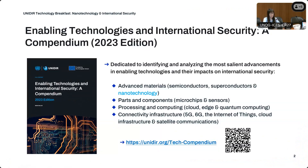The series builds upon the research insights from our recent publication titled Enabling Technologies and International Security: A Compendium, 2023 edition, which you can access through the link or QR code on the screen. This compendium is dedicated to identifying and analyzing the most salient advancements in enabling technologies and their impact on international security. Four distinct technology categories were covered, including advanced materials, parts and components, processing and computing power, and the relevant connectivity infrastructure, which provides vital support for the ICT ecosystem.